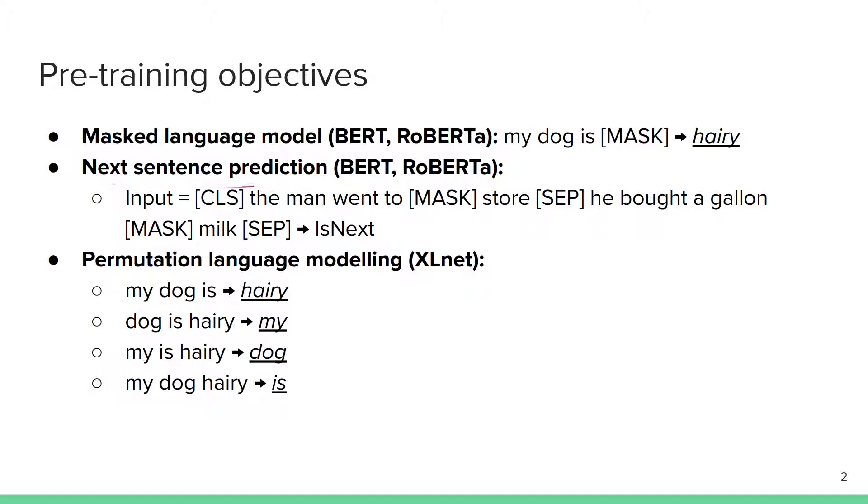Another approach used in the BERT and RoBERTa papers is next sentence prediction. There you are given two sentences instead of a single one, like 'the man went to [MASK] store' followed by a special separator token for sentence separation, then 'he bought a gallon [MASK] milk'. You're asking the model to predict whether the second sentence is following naturally the first sentence, outputting a special 'is next' or 'is not next' token. This has also been shown to work nicely.